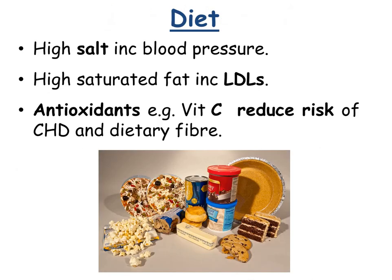Diet is another key risk factor. A high-salt diet increases blood pressure, which can lead to coronary heart disease. High saturated fat increases low-density lipoproteins — those litter droppers — raising the risk of coronary heart disease. On the positive side, antioxidants such as vitamin C and dietary fibre both reduce the risk of coronary heart disease. So even if you are genetically predisposed to higher risk, there are still good lifestyle choices you can make to reduce the risk of coronary heart disease.